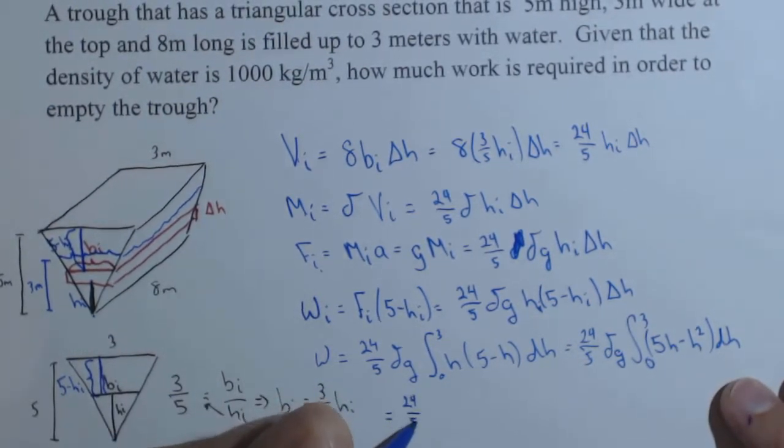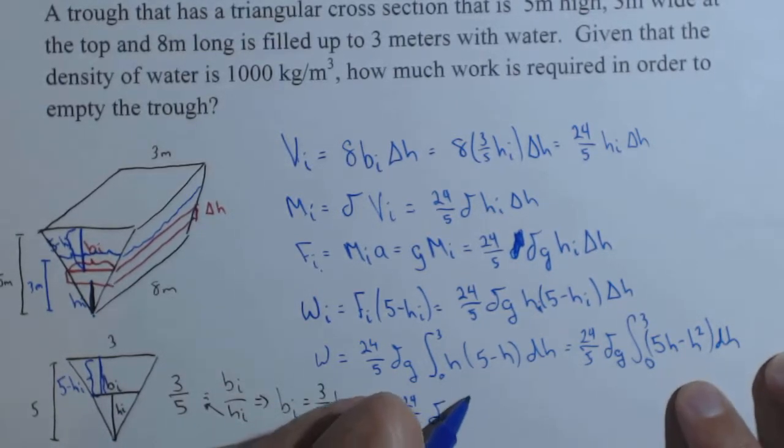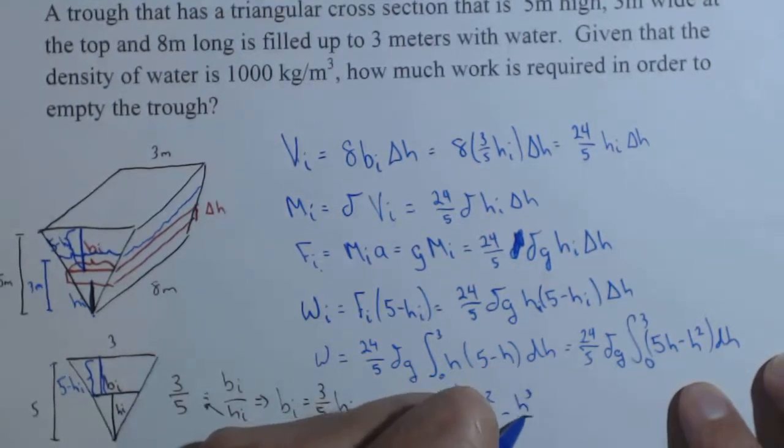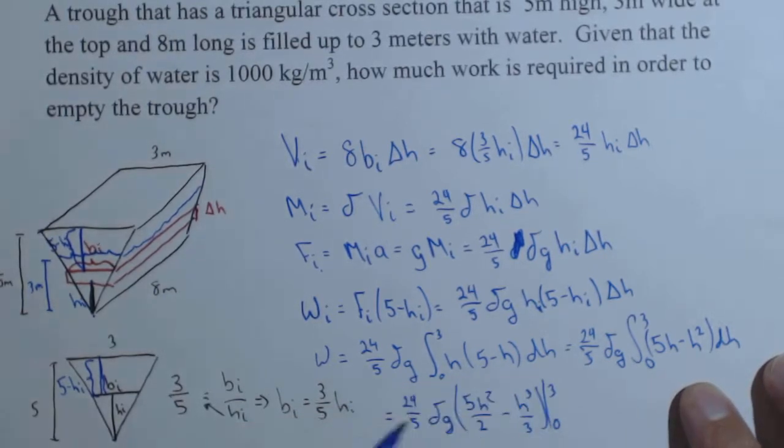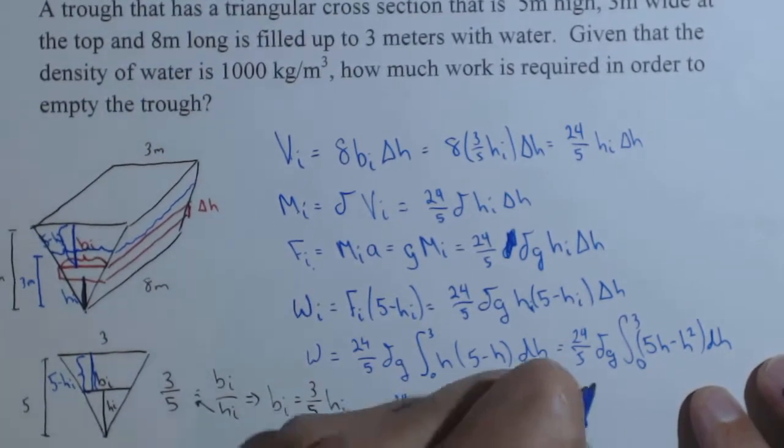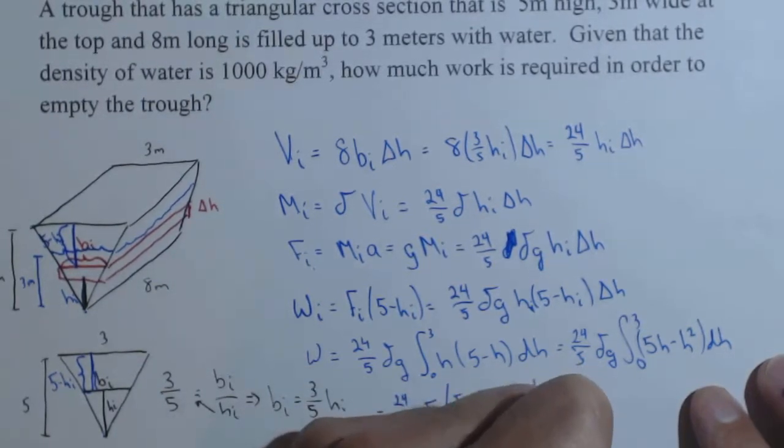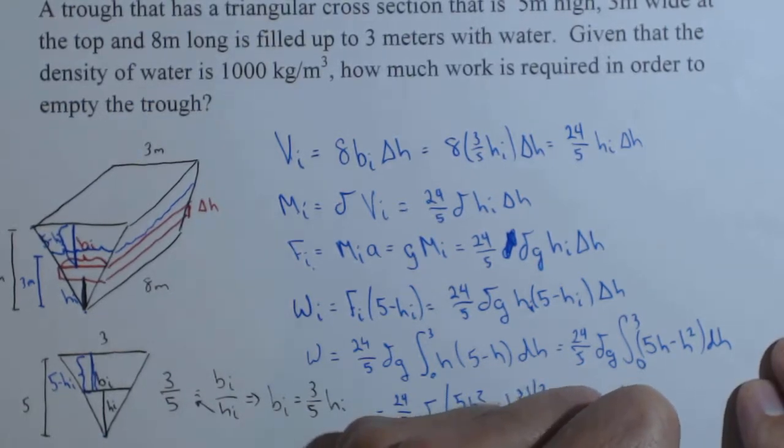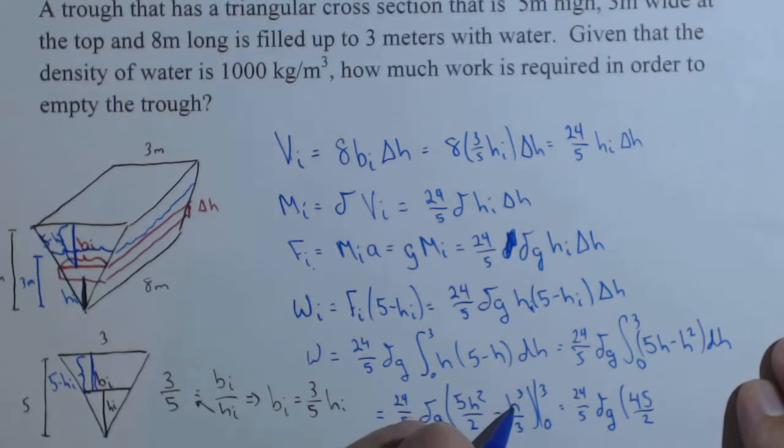24 fifths delta g. This is going to be 5H squared over 2 minus H cubed over 3 from 0 to 3. So 24 fifths delta g times, plugging 3 in, we get 9 times 5 is 45 halves.